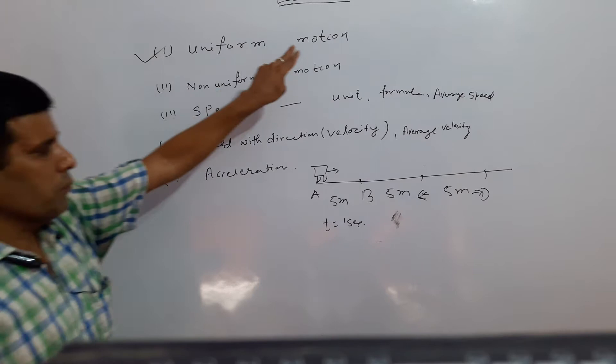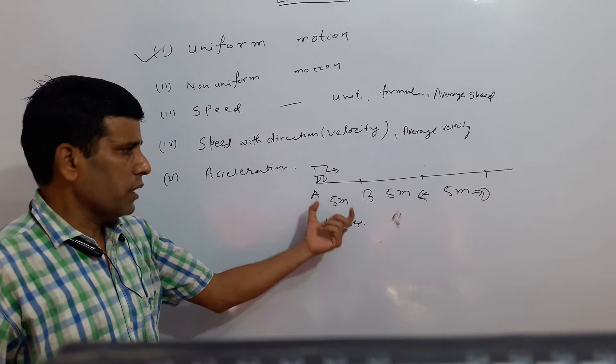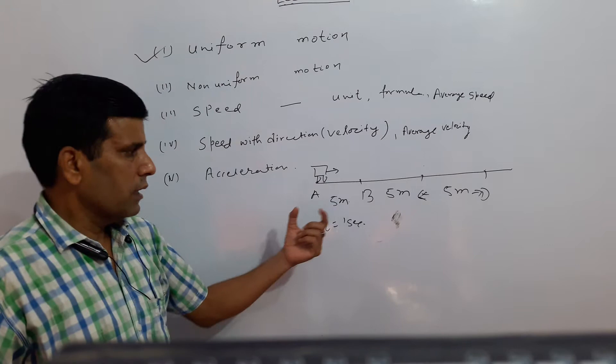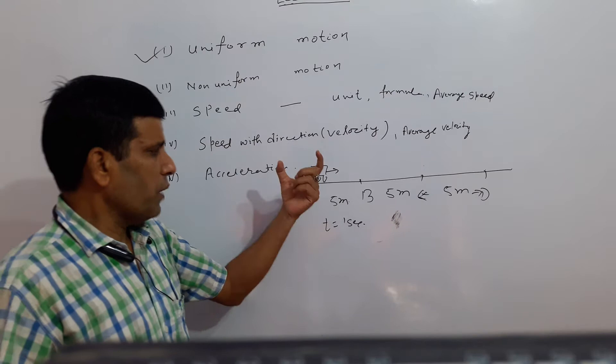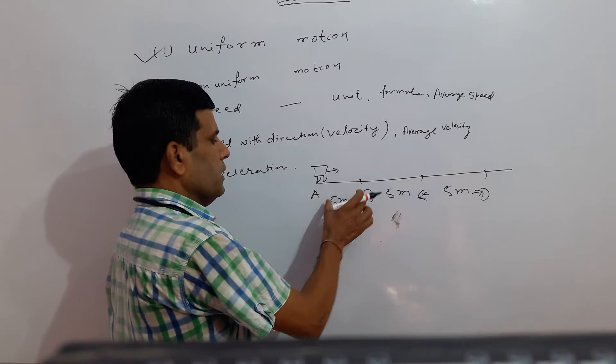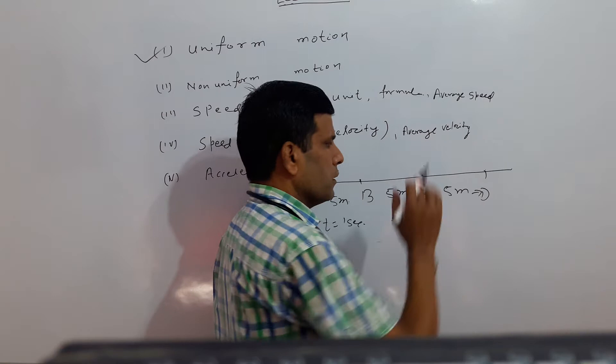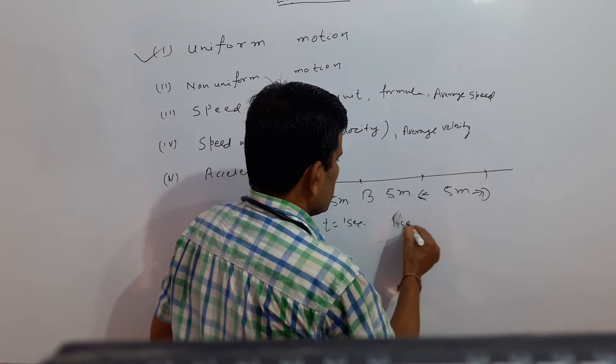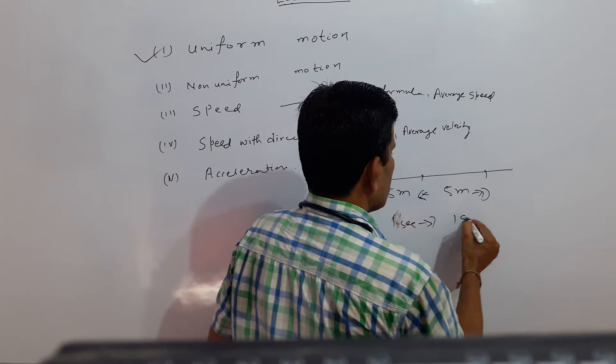So, according to the concept, uniform motion means: if any object travels equal distance in every equal interval — the interval here is 1 second — this object travels 5 meters distance in every interval. A to B: 5 meters. B to C: 5 meters. C to D: 5 meters. In every interval. The time taken from A to B is 1 second. B to C is 1 second. C to D is 1 second.